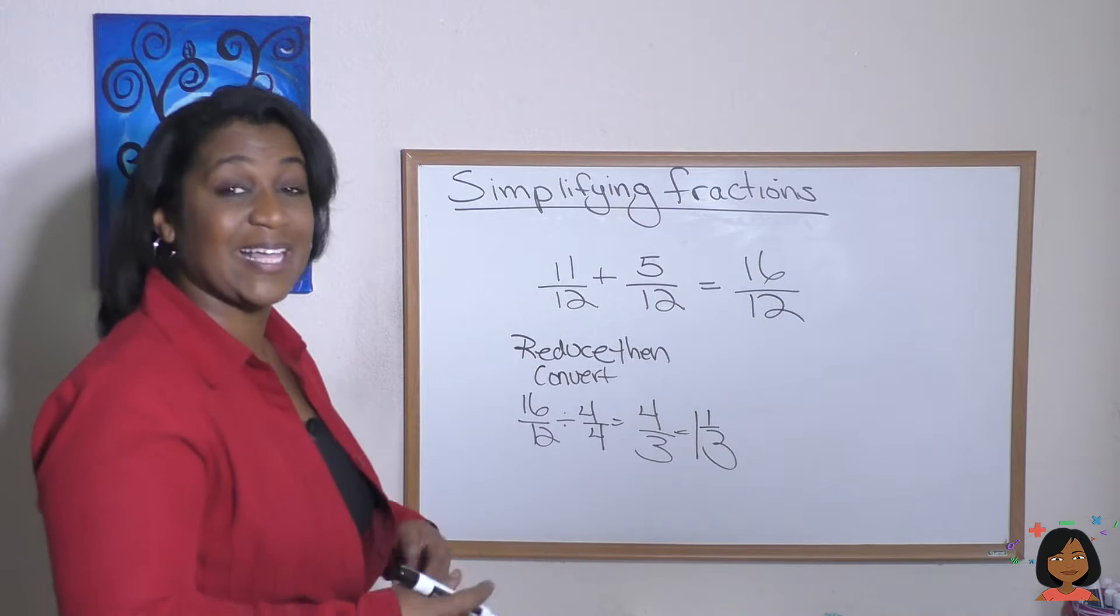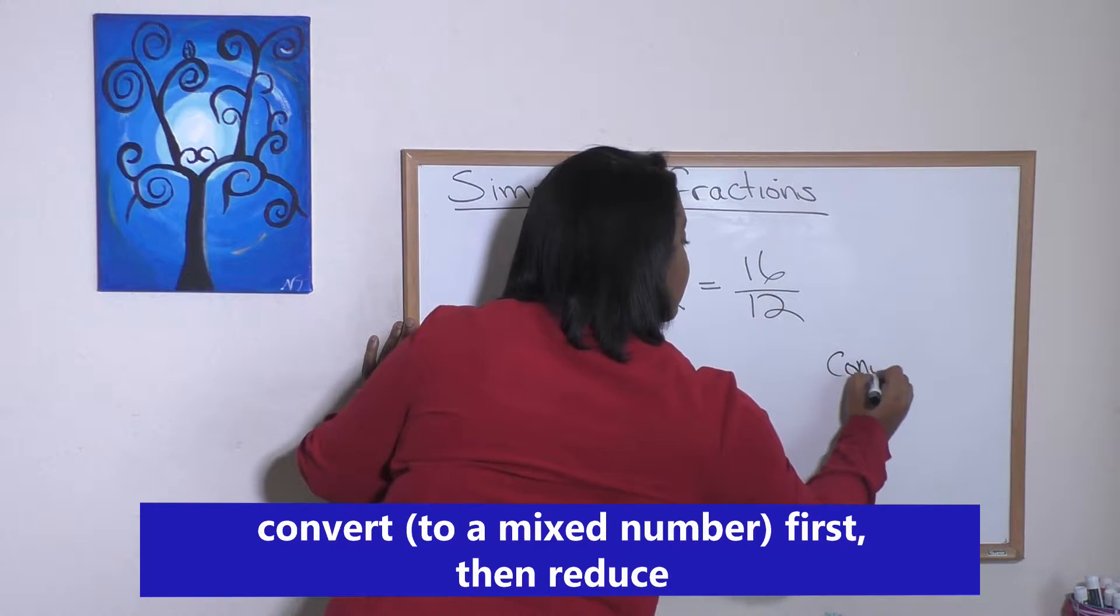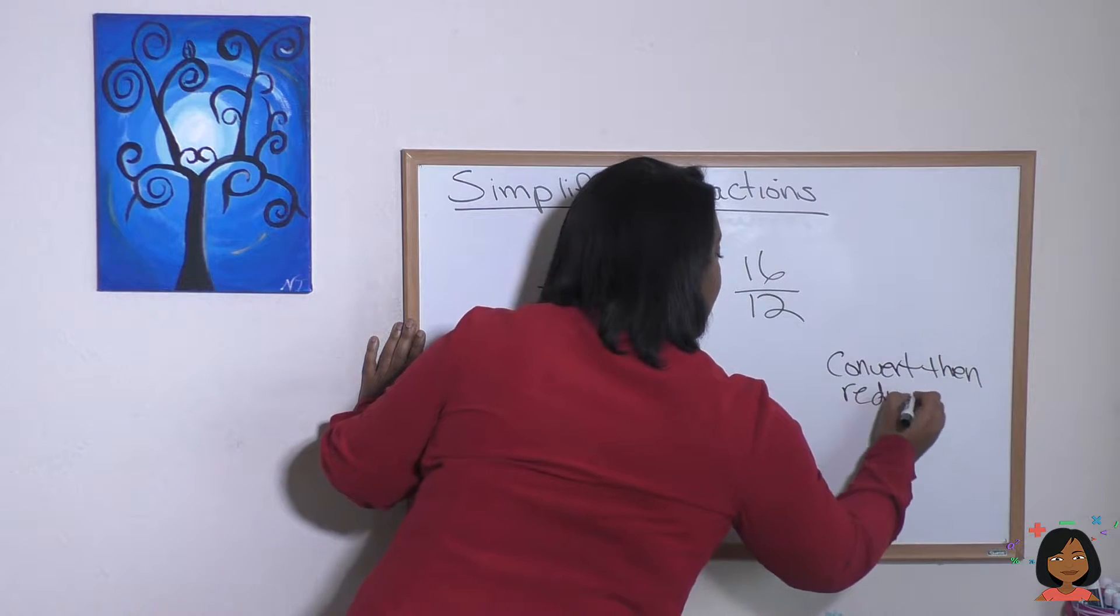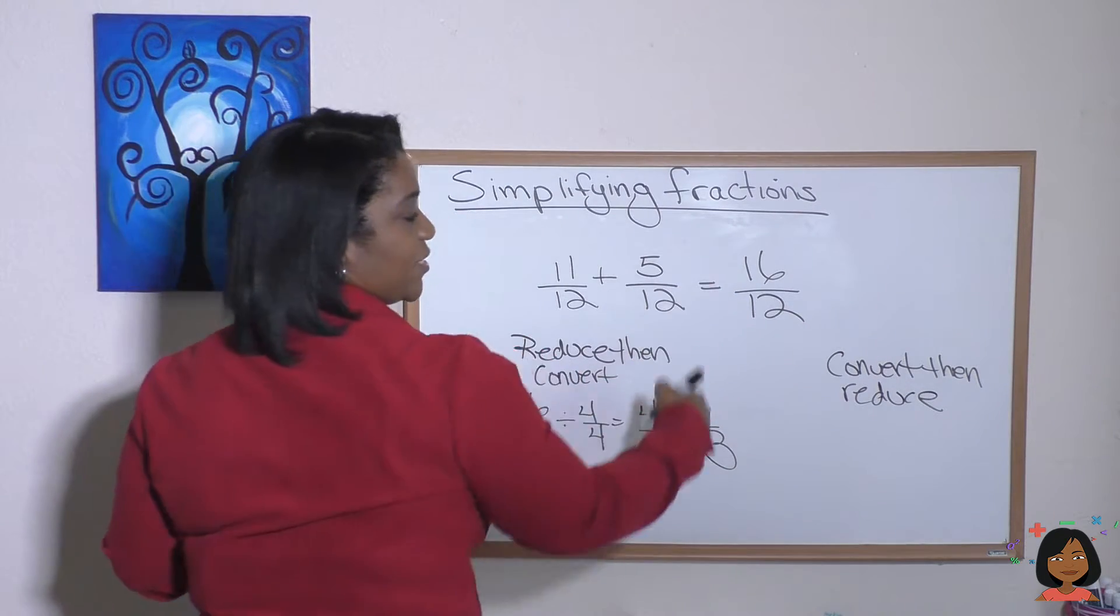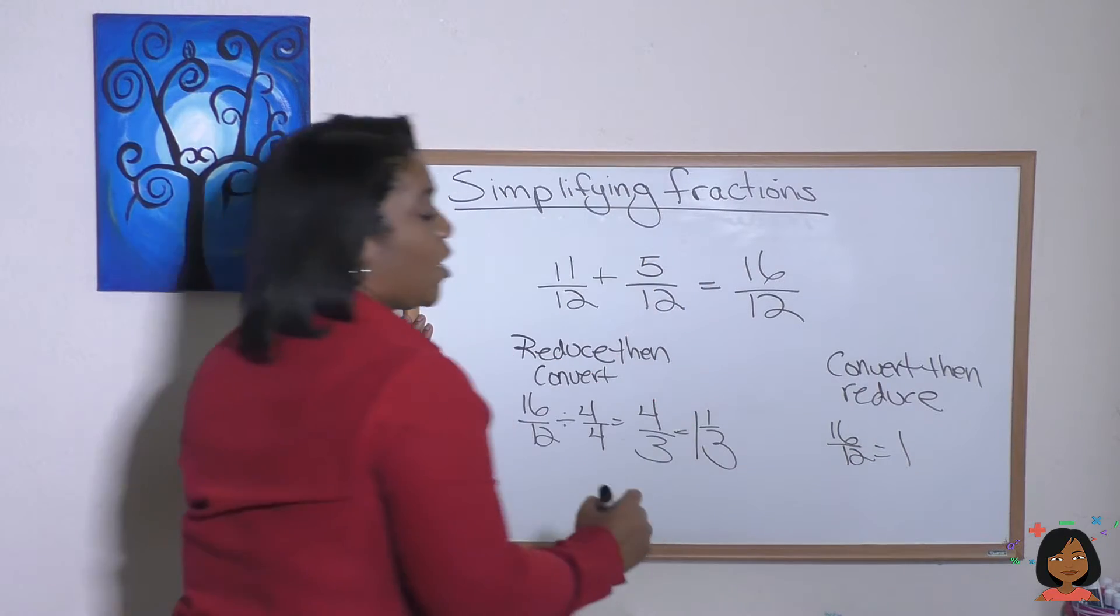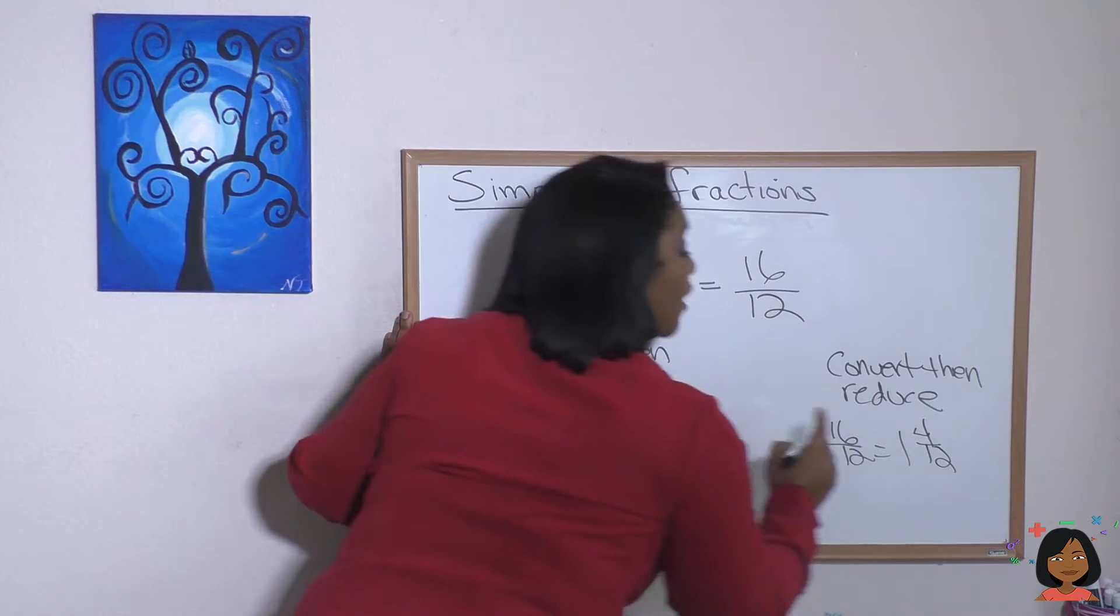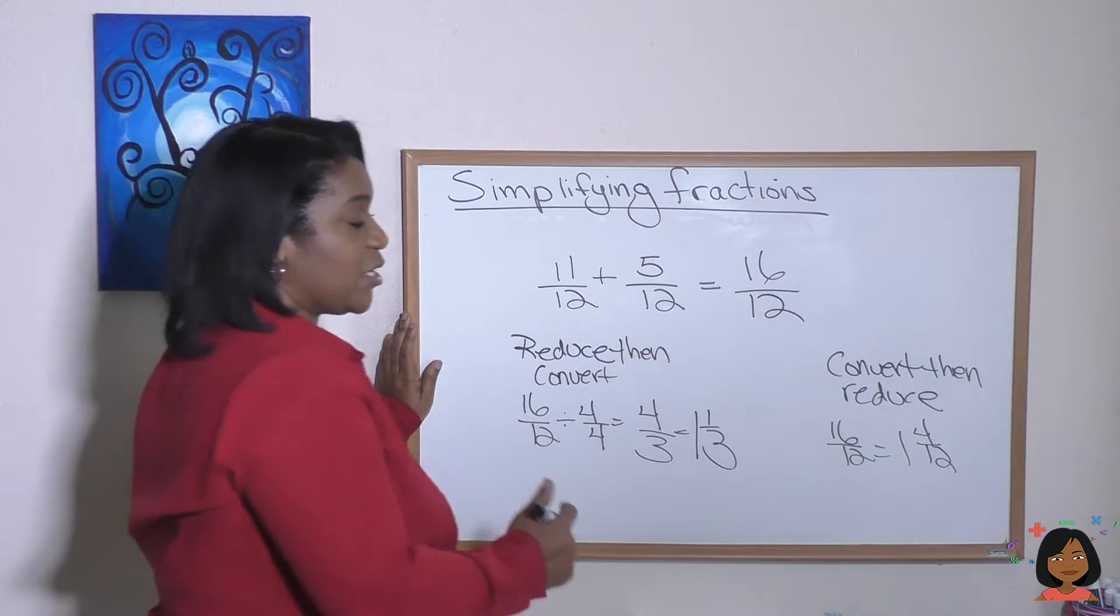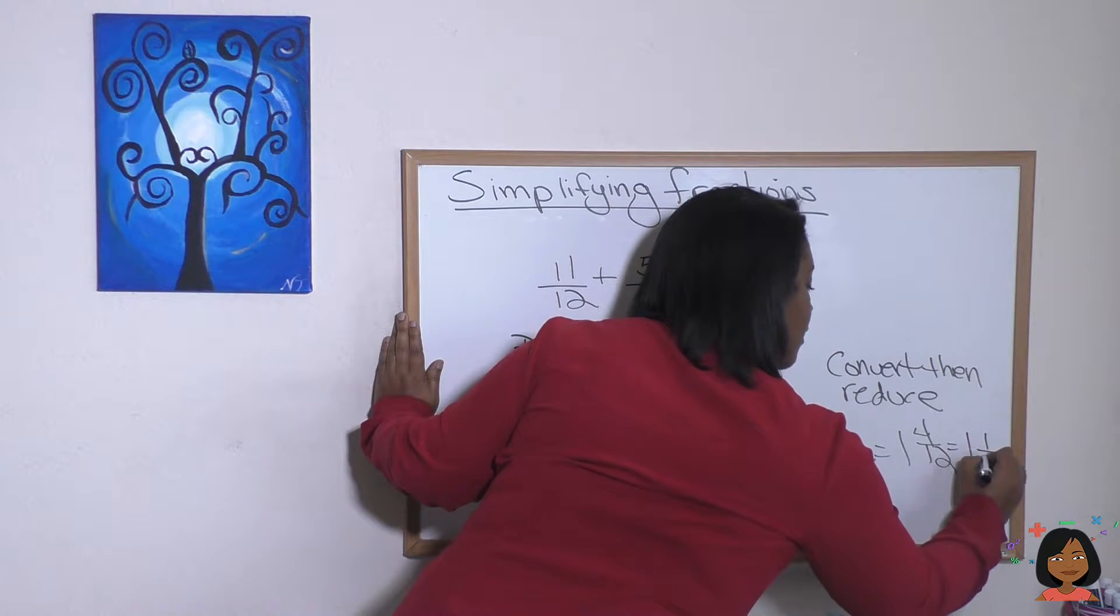Let's try it the other way. Let's convert first, then reduce. I'll write that over here. Okay. So let's convert it first. 16 twelfths, excuse me, is the same thing as saying one and four twelfths. And four twelfths can be simplified or can be reduced down. So we're going to reduce that to one and one third.